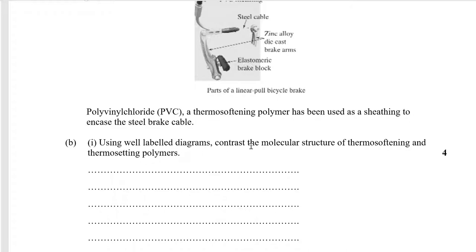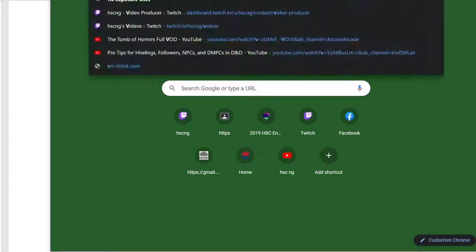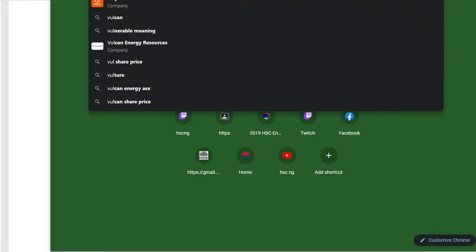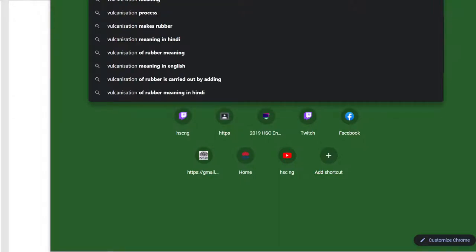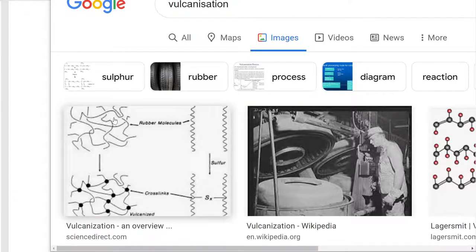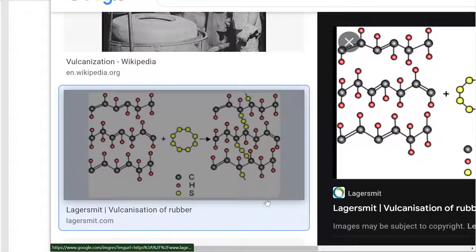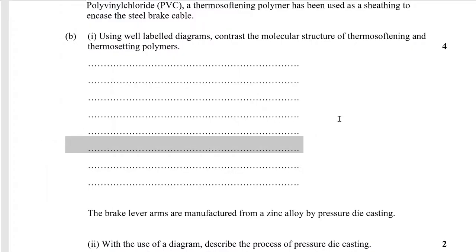Using a well-labelled diagram, contrast the molecular structure of thermosetting and thermosoftening polymers. The one we typically talk about is the vulcanization of rubber. You draw rubber here, crosslinks of sulfur here — and the crosslinks of sulfur produce a thermosetting polymer. I'm sure that's in our notes; I think I include it in the chapter one notes written at the start of the year.